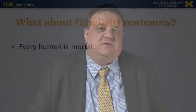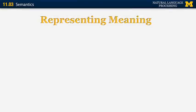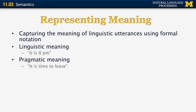Let's look at a different example using natural language text, specifically an English sentence: 'Every human is mortal.' How can we define the meaning of this sentence? Representing meaning is one of the most important aspects of semantics, and we want to be able to capture the meaning of linguistic utterances using some sort of formal notation. Linguistic meaning can be very different from what is known as pragmatic meaning.